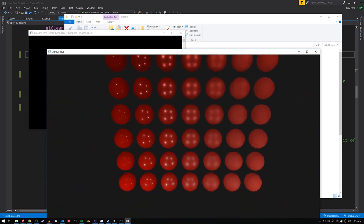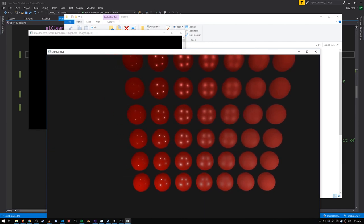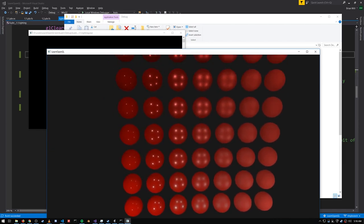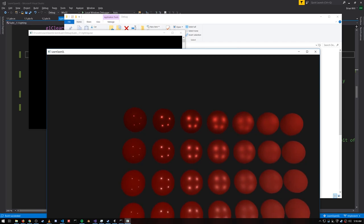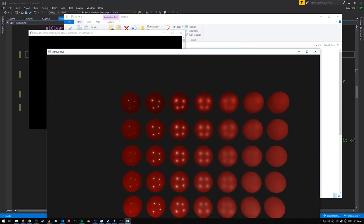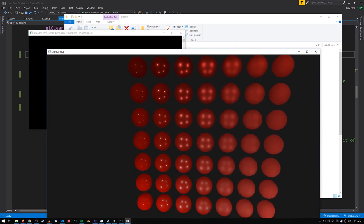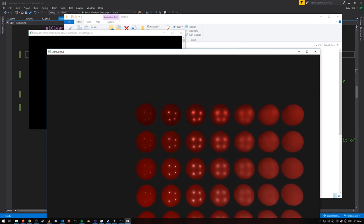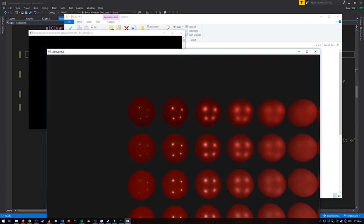And bottom to top, the spheres are increasing in metalness. The ones at the bottom are not metal at all, and the ones at the top are full metal. As you can see, with increasing roughness, the specular highlights get bigger but fainter. Metalness increases the intensity of the specular highlight a bit.